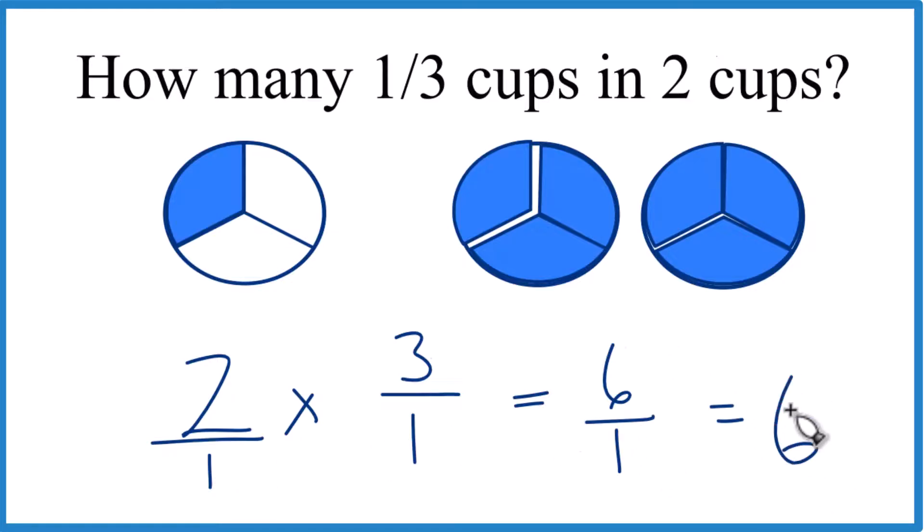Six over one equals six, and that's what we found before. One, two, three, four, five, six. So if you have two cups, one-third goes into two cups six times.